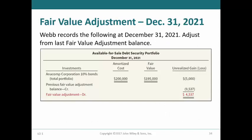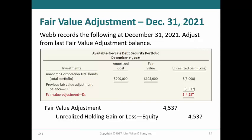At the end of the year, there is only one remaining security in Web's portfolio: the Anacomp Corporation bonds with amortized cost of $200,000 and fair value of $195,000. The difference between the amortized cost of $200,000 and the fair value of $195,000 is an unrealized holding loss of $5,000. To record the adjusting entry, Web would debit fair value adjustment for $4,537 and credit unrealized holding gain or loss equity for the same amount.